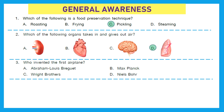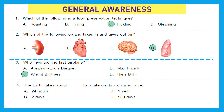Question 3: Who invented the first airplane? The answer is the Wright Brothers. Option C is the correct answer. Question 4: The earth takes about how long to rotate on its own axis once? The time it takes the earth to rotate so the sun appears in the same position in the sky is known as a solar day. It is 24 hours. The right answer is option A, 24 hours.